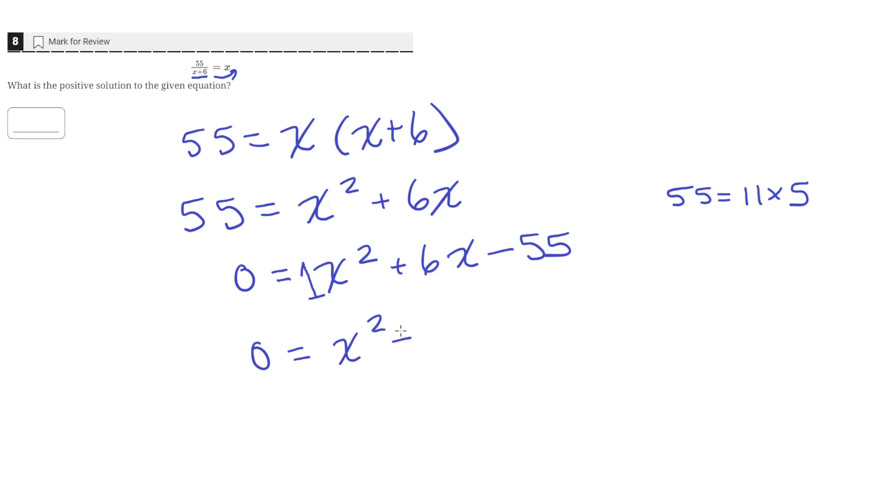So 0 equals x squared plus 11x minus 5x minus 55. So then we can factor out an x from these first two terms and we can factor out a negative 5 from the second two terms.